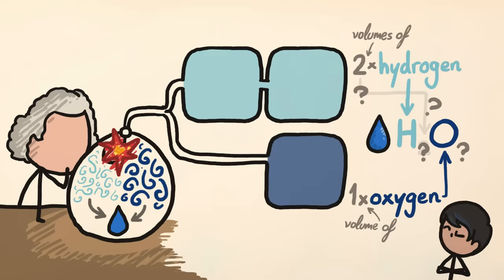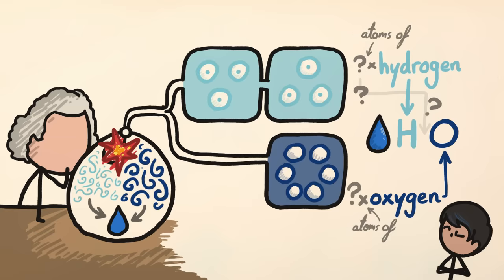And back then, they had no way of knowing how many atoms each volume has. For example, it could be that a volume of oxygen had twice as many atoms as a volume of hydrogen, which would lead to a one to one ratio of atoms.